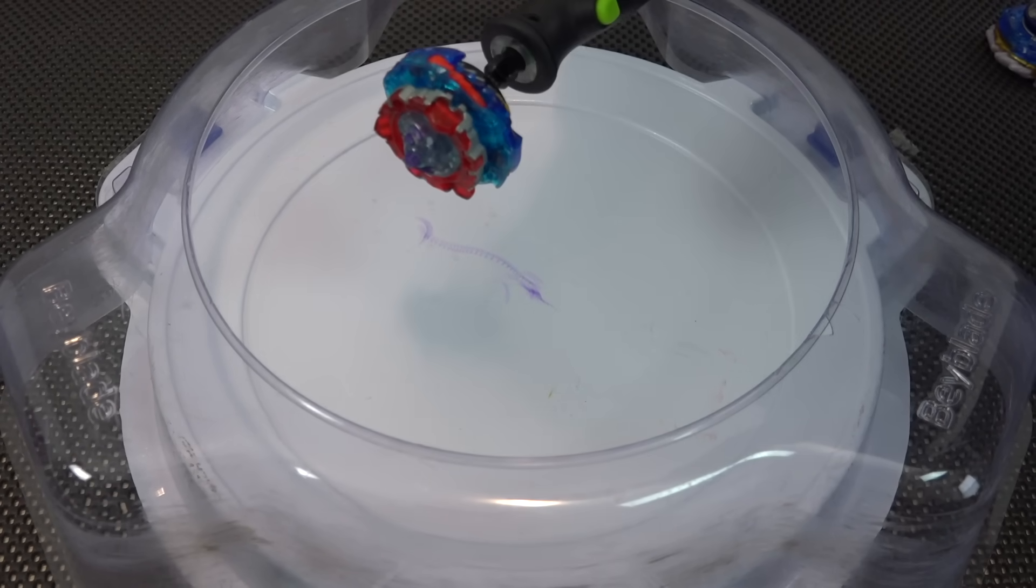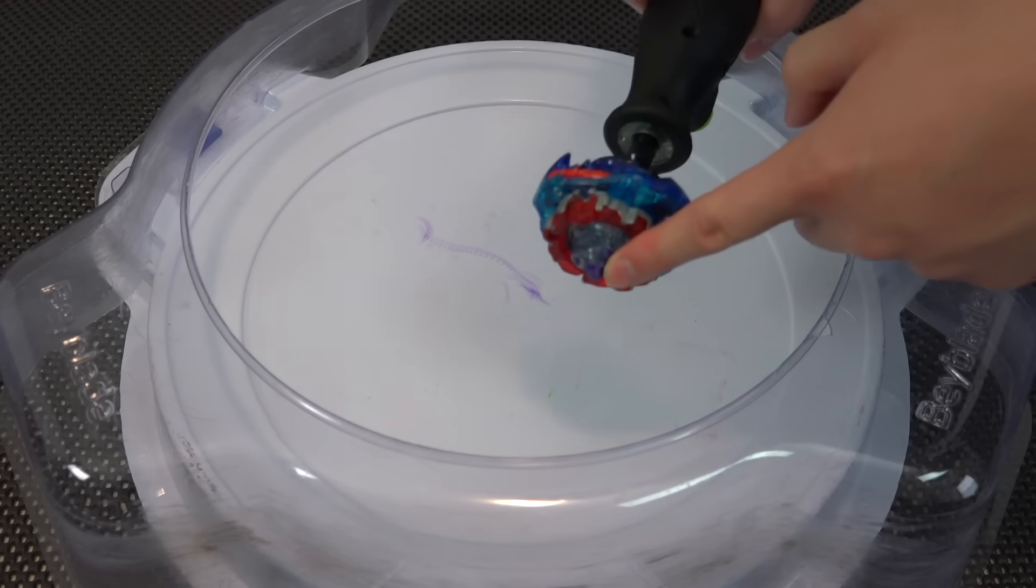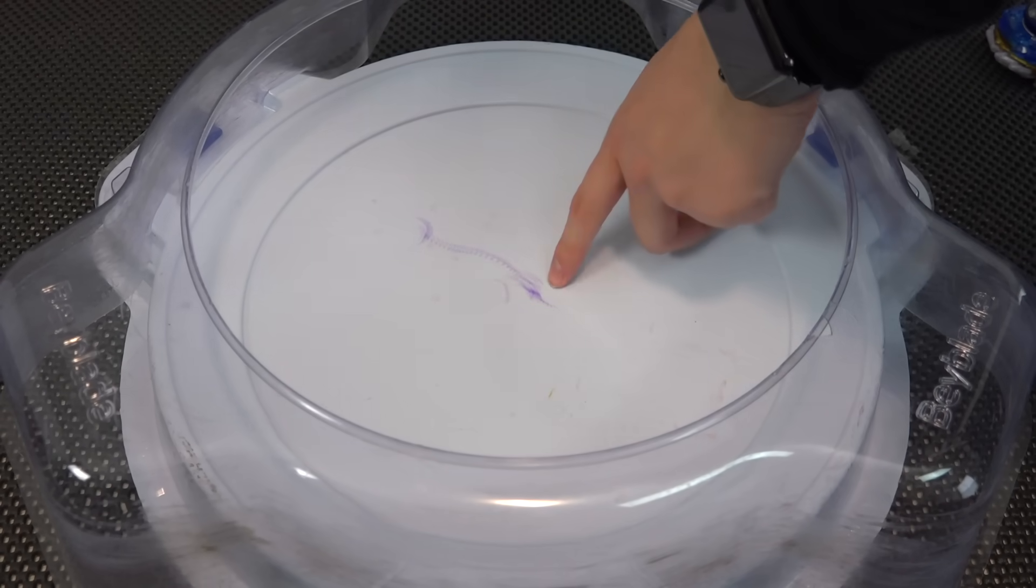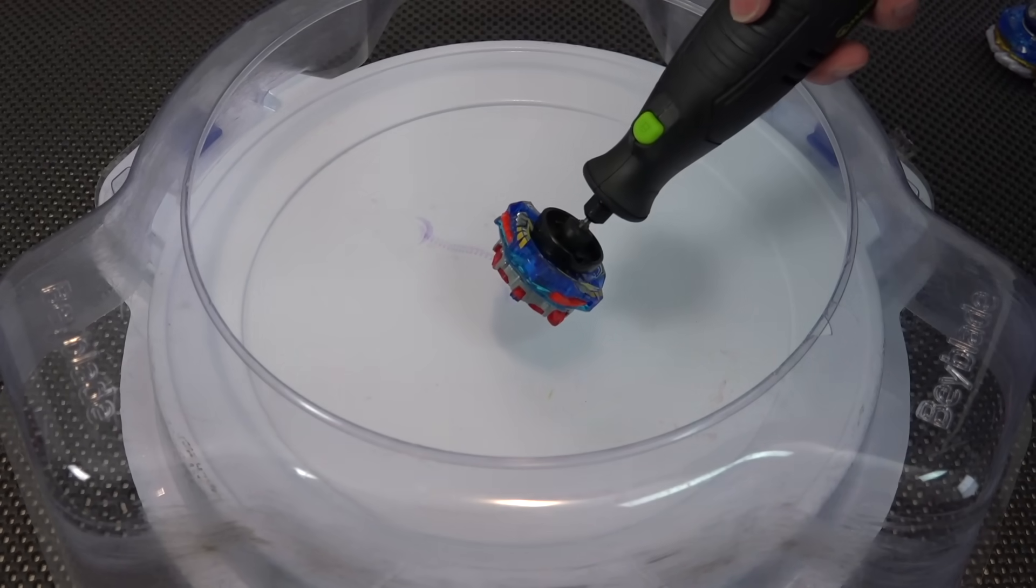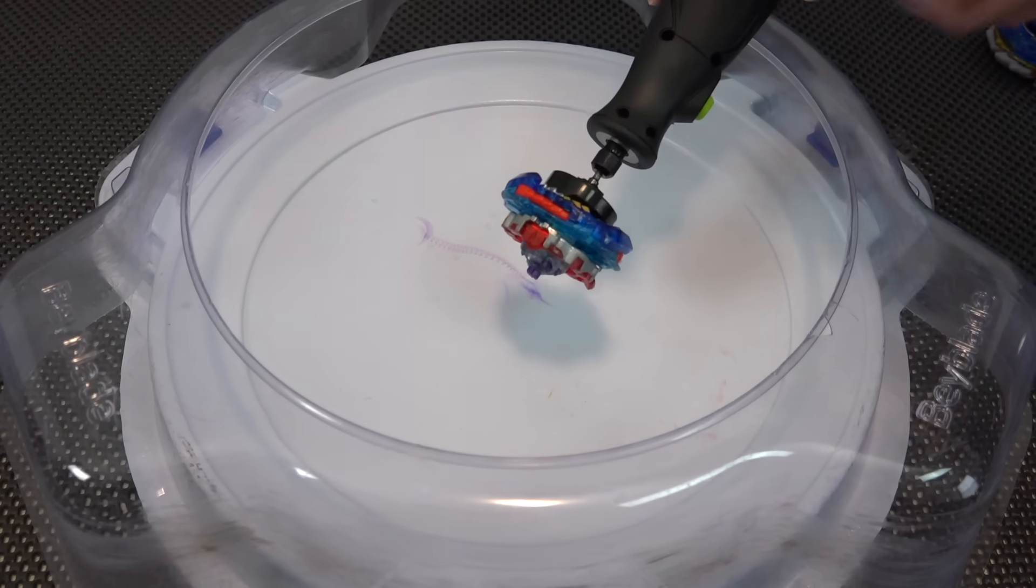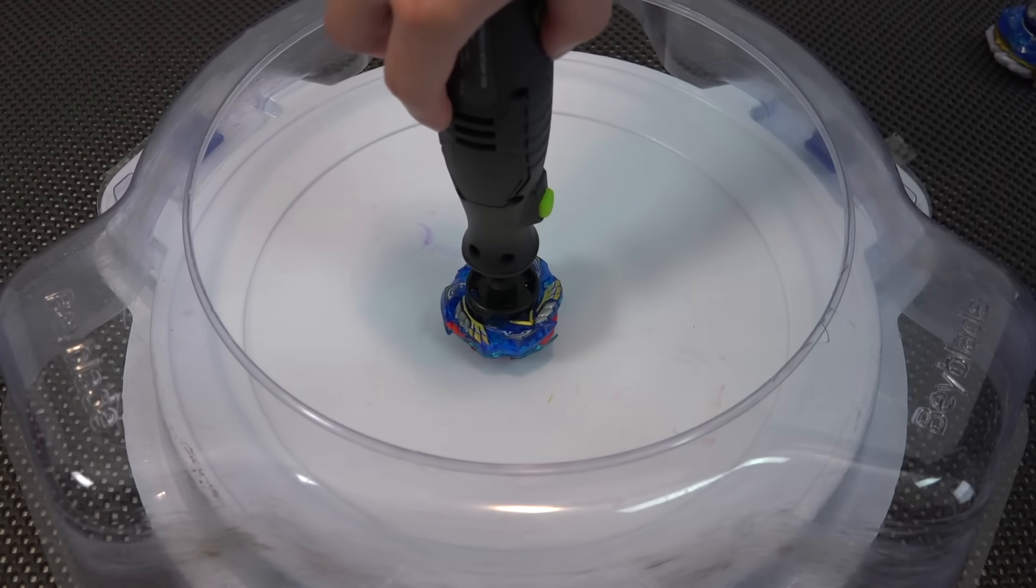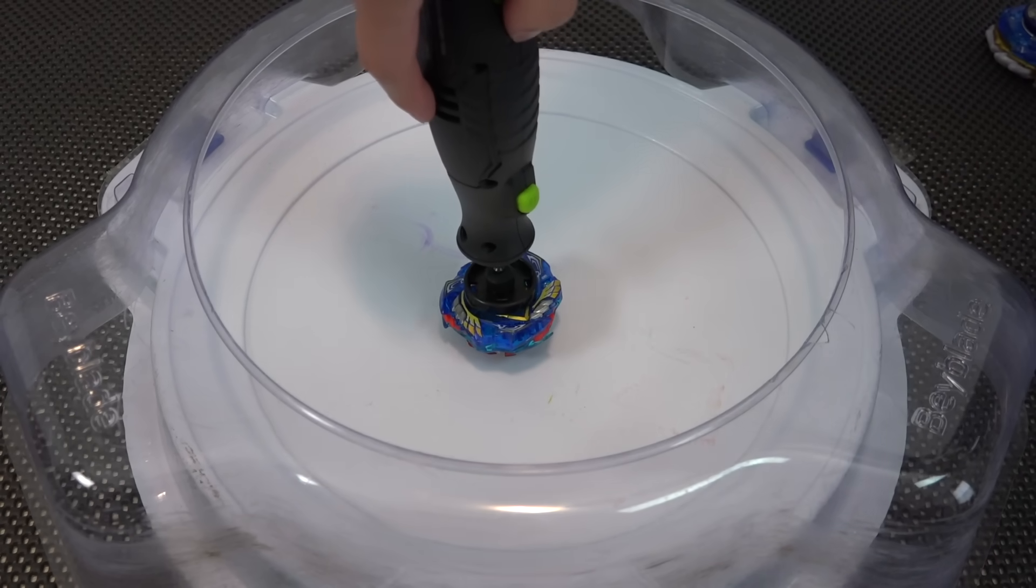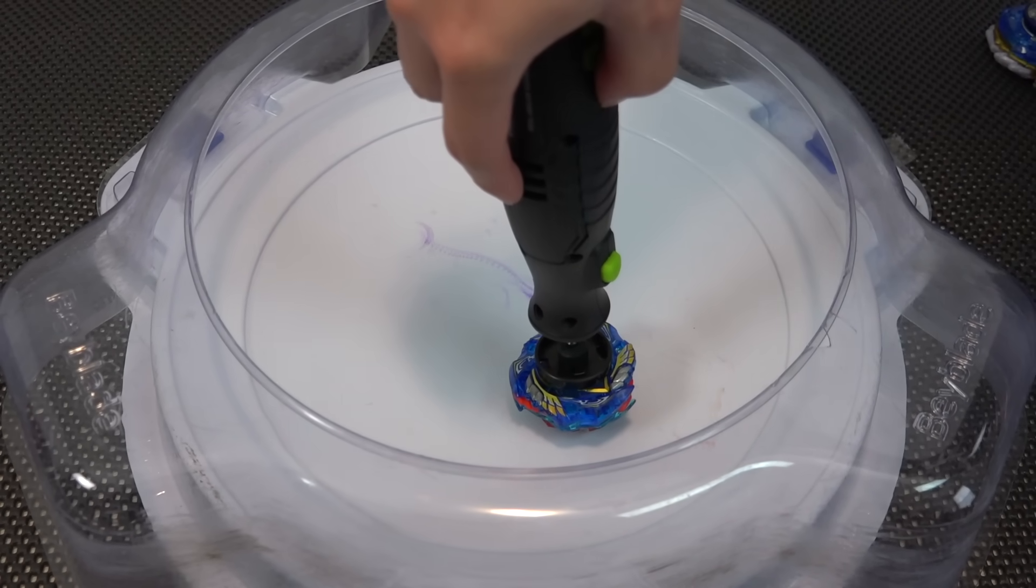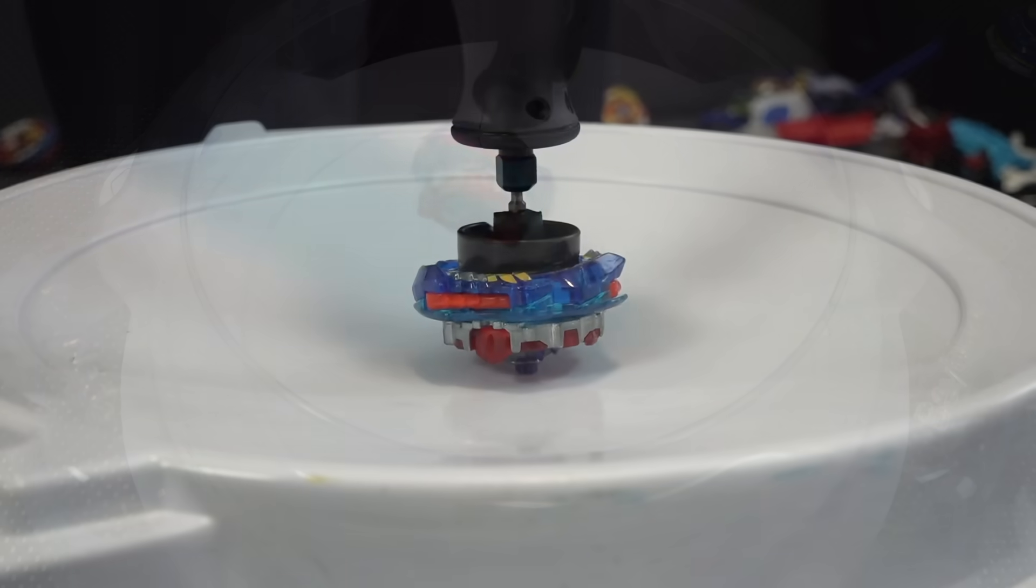So earlier in the video, we actually kind of ruined this pro series driver. We ripped off the purple bits and streaked it onto the stadium. So I kind of thought maybe we should just like wear it down all the way. Let's just see what happens. All the way to the bottom. Let's just ruin it. Let's do it. Might as well since we're not able to do that with any other launchers anyway. So yeah, let's draw on the stadium with the driver. This is the definition of Beyblade abuse.